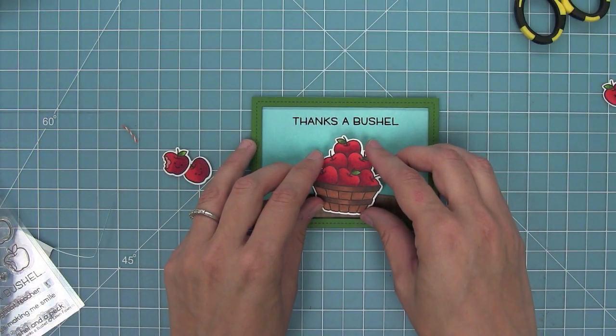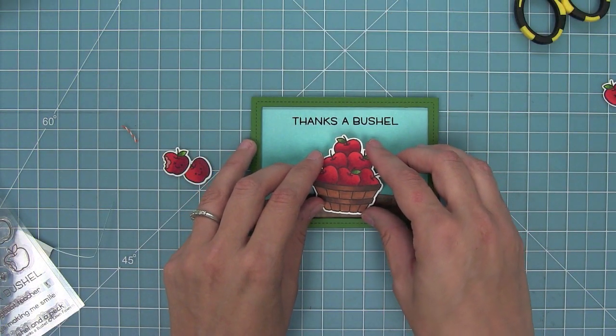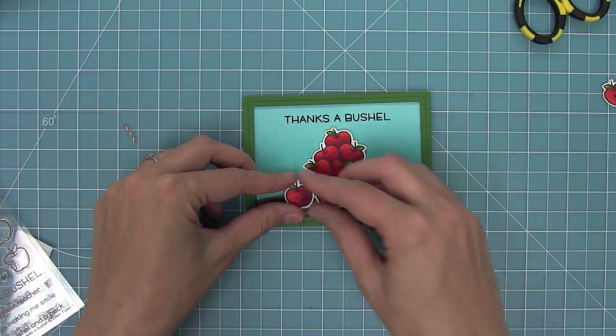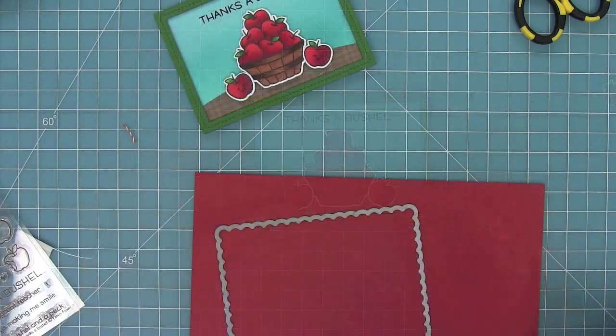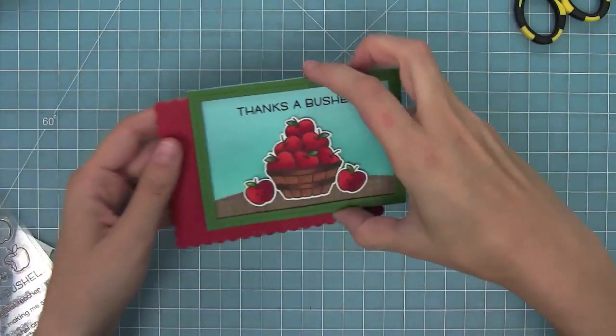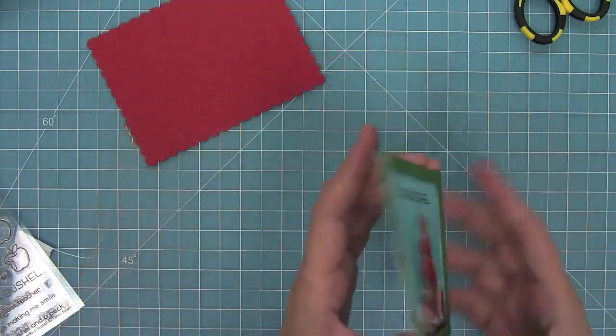I'm going to add all of my pieces on with some foam tape, overlapping those apples on the bushel to kind of create a cute little scene with them. Then I'm going to take a scalloped rectangle and cut it from some chili pepper cardstock, and I think it looks really pretty with the red for the apple and then the green for the leaf surrounding the card.